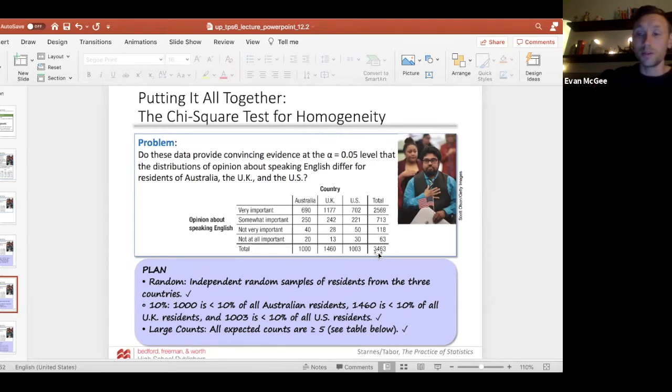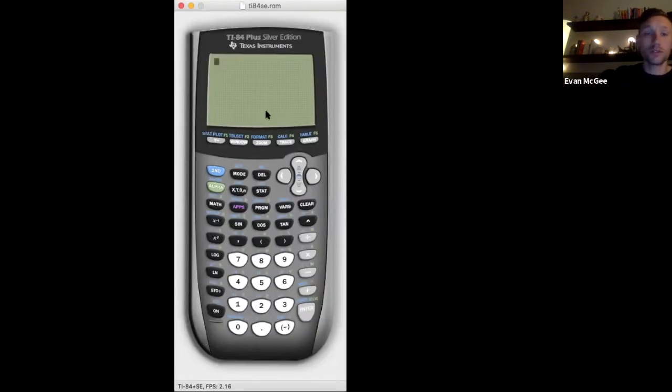The best way to do it is to put it in your calculator like I showed you previously. I'll do it here as a reminder for how to get the expected counts. First we'll put in the table into the matrix. Hit second, x and negative first. Remember to scroll over to edit and we'll edit matrix A.